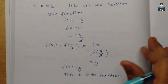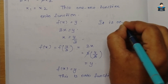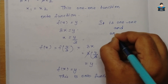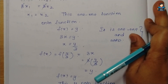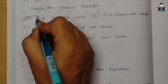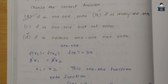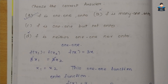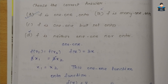So the given function f(x) = 3x is both one-to-one and onto. Option A is correct: f is one-to-one and onto. This completes Exercise 1.2. In the next video we'll continue. If you like this video, please share and subscribe. Thank you.